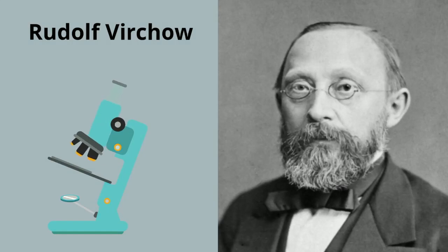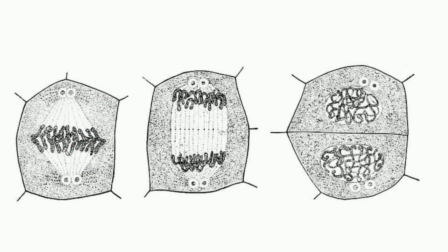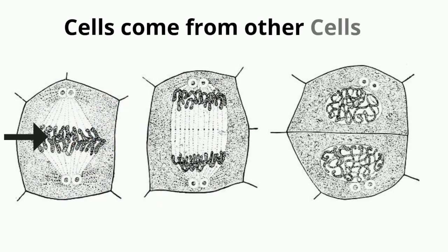In 1855, a German scientist named Rudolf Virchow made a fundamental observation about living things: all cells come from other cells. Therefore, cells must be able to make copies of itself.